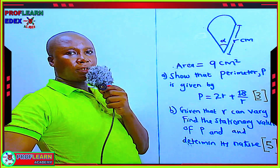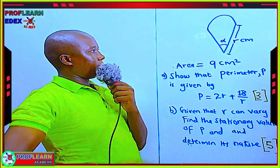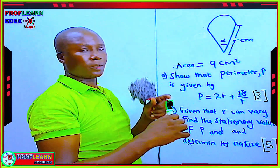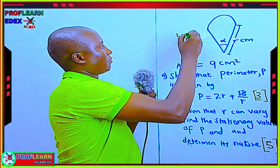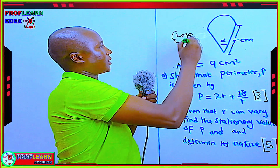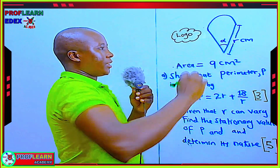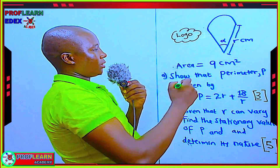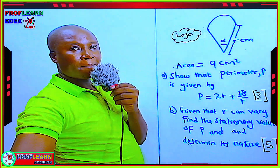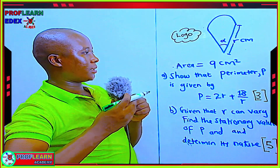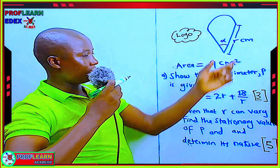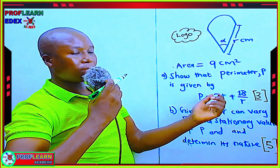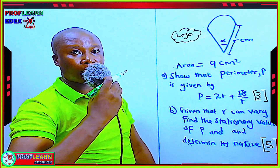In this question, we are told that this is a logo which has this particular shape that we are given. We are told that the area of this logo is 9 cm squared. We are expected to show that the perimeter P of this logo is P equals 2R plus 18 over R, and for you to earn 3 marks.